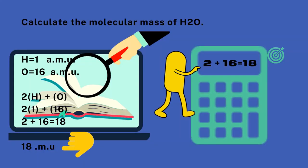Calculate the molecular mass of H2O. H equals 1 amu, O equals 16 amu. 2H plus O: 2 times 1 plus 16 equals 2 plus 16 equals 18. 18 amu.